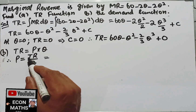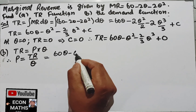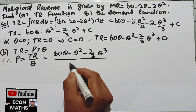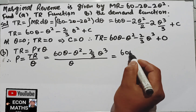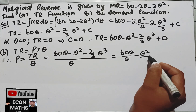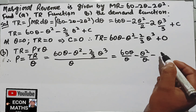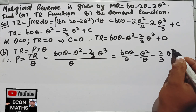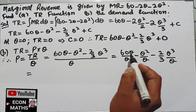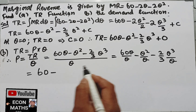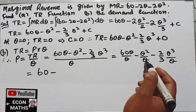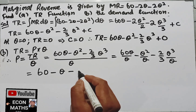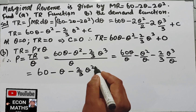Our total revenue function is 60Q minus Q squared minus 2/3 Q cubed, and we divide by Q. This becomes 60Q divided by Q, minus Q squared divided by Q, minus 2/3 Q cubed divided by Q. The Q terms cancel: 60Q over Q gives 60, Q squared over Q gives Q, and Q cubed over Q gives Q squared.